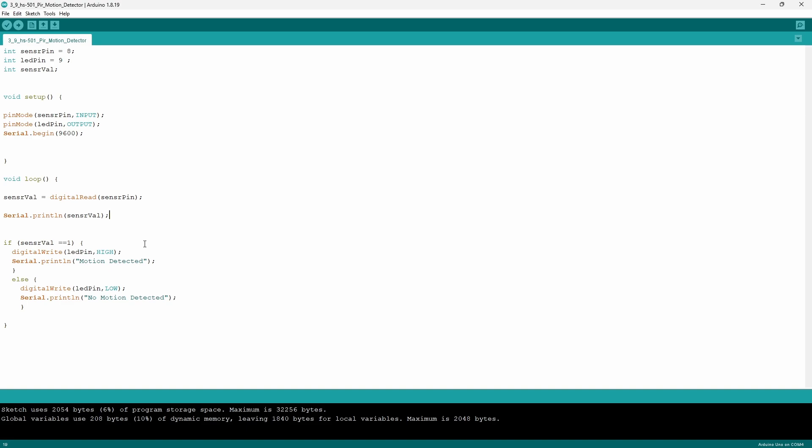Using the if statement I told the Arduino that if the sensor value is equal to 1 which is a high, I tell it to output a high for the LED pin which will end up lighting up the LED and I also tell the Arduino to print onto the serial monitor motion detected.